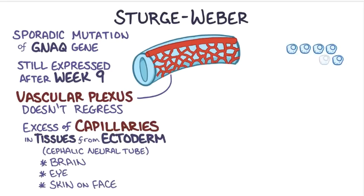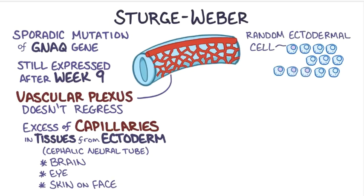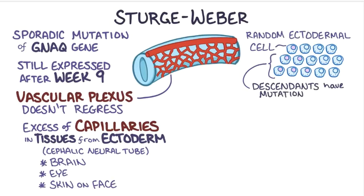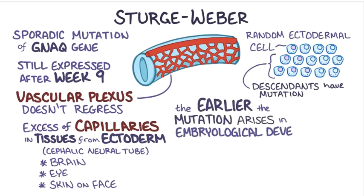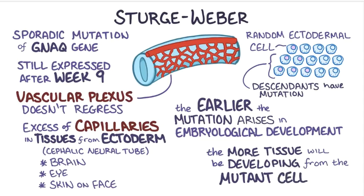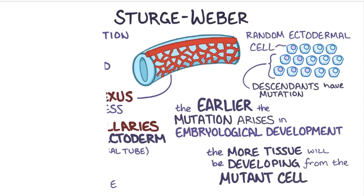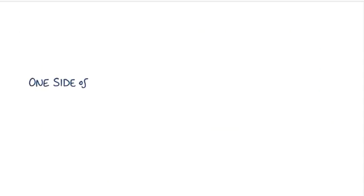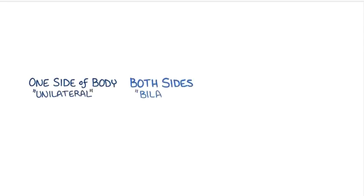The GNAQ mutation happens sporadically in a random ectodermal cell, which then replicates over and over, so all of the cells that descend from that mutated cell have the mutation. This means that the earlier the mutation arises in embryological development, the more tissues will be affected. The variation accounts for whether Sturge-Weber is on one side of the body, or unilateral, or both sides of the body, or bilateral.